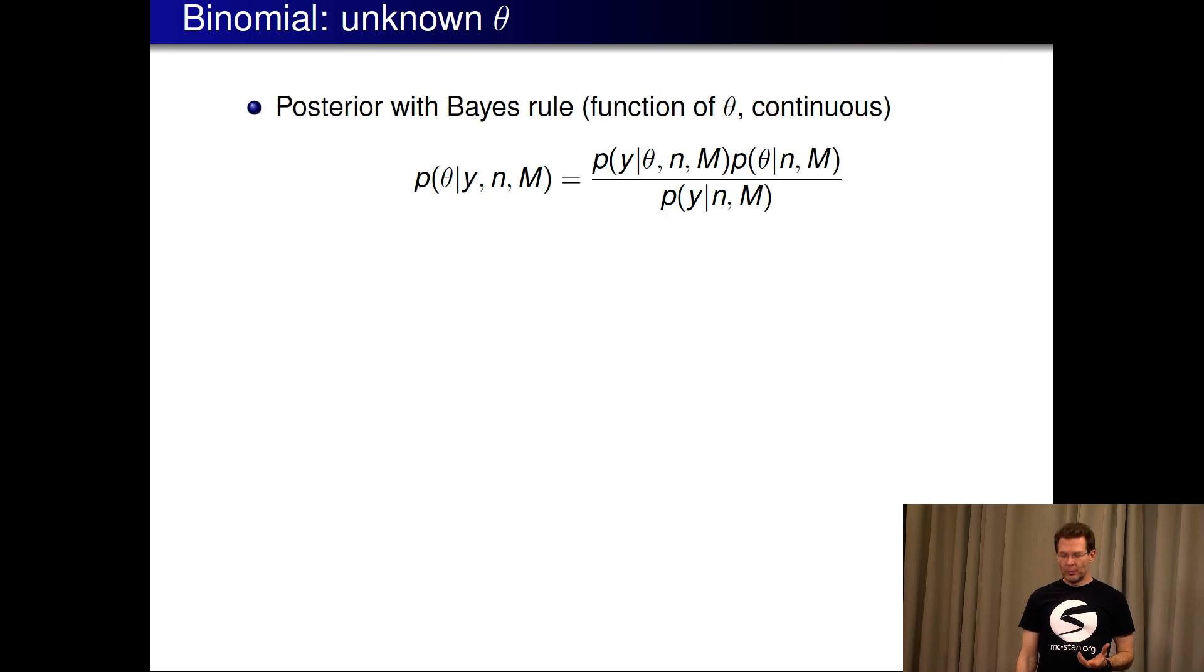In Bayes rule, here was the term which looks like our observation model, but if we fix the number of red chips we saw and instead vary theta, then this is called likelihood. We have a prior, we have something which is just a normalization term.